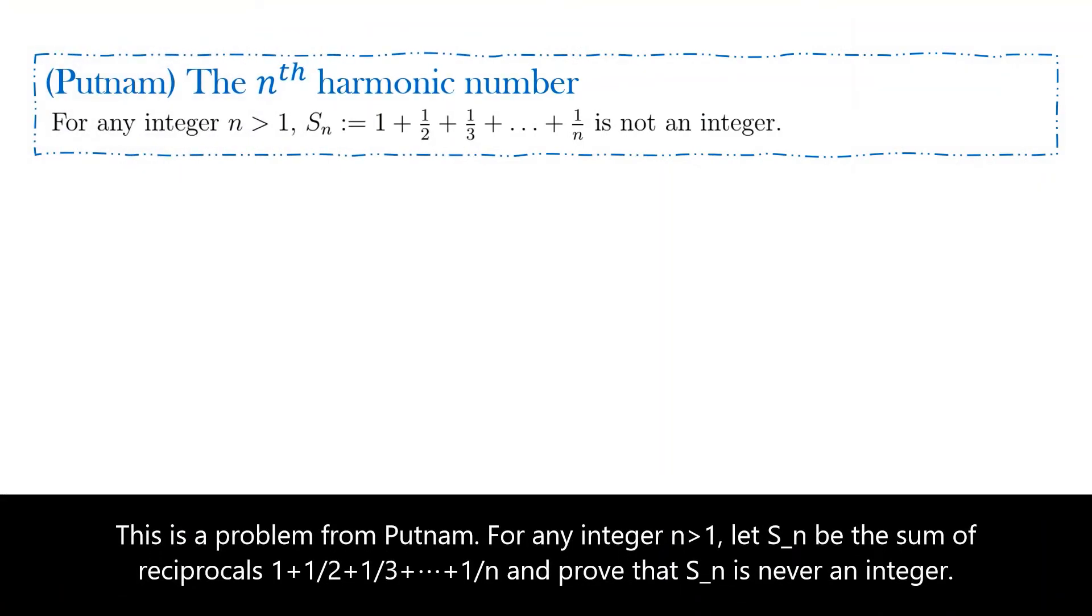For any integer n more than 1, let S_n be the sum of reciprocals 1 plus 1 over 2 plus 1 over 3 up to 1 over n, and prove that S_n is never an integer.